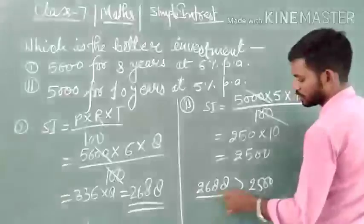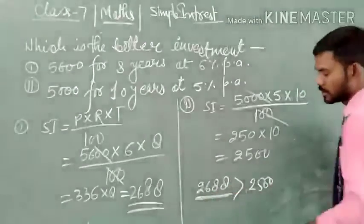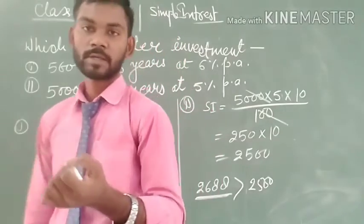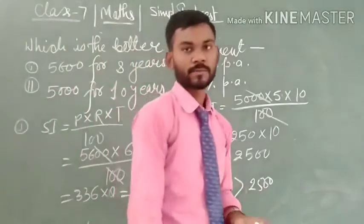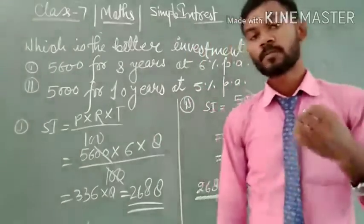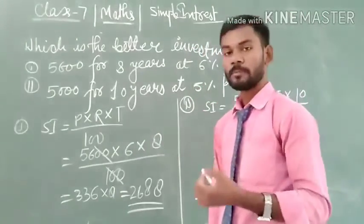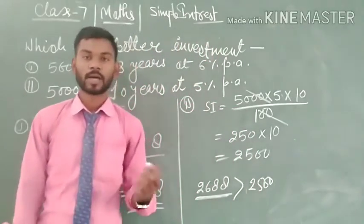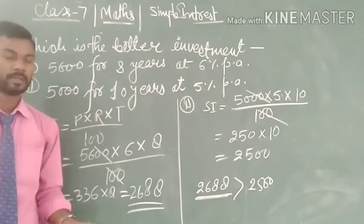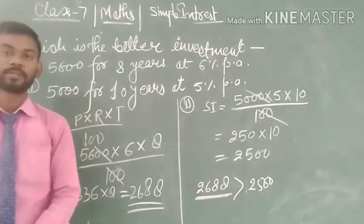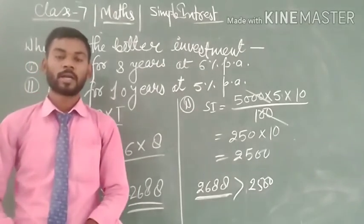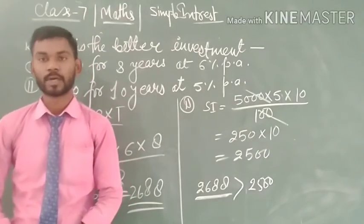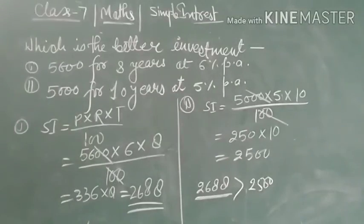So here you can see: in the first case, when we deposit 5,600 for 8 years at the rate of 6%, we get 2,688 rupees. In the second case, when we deposit 5,000 for 10 years at the rate of 5%, we get 2,500 rupees. Since 2,688 is greater than 2,500, we get more interest in the first case. Therefore, the first investment is better than the second. I hope this is clear to everyone. If you have any doubt, please mention it in the comment section and I will clear your doubt in my next video. Thank you.